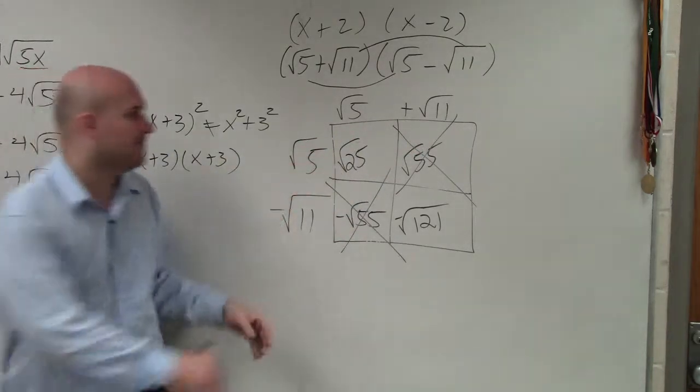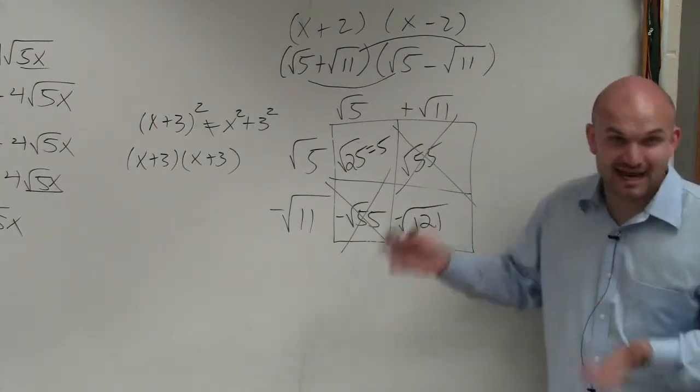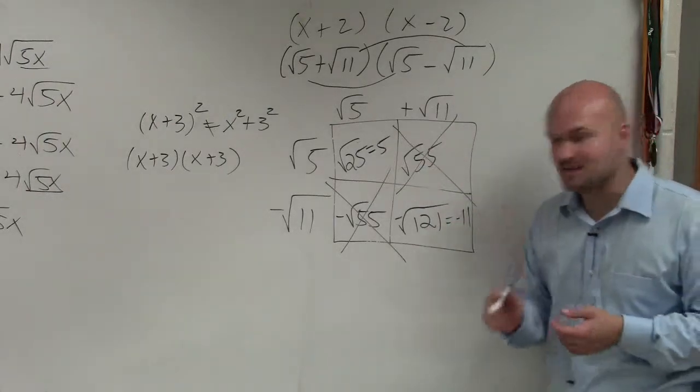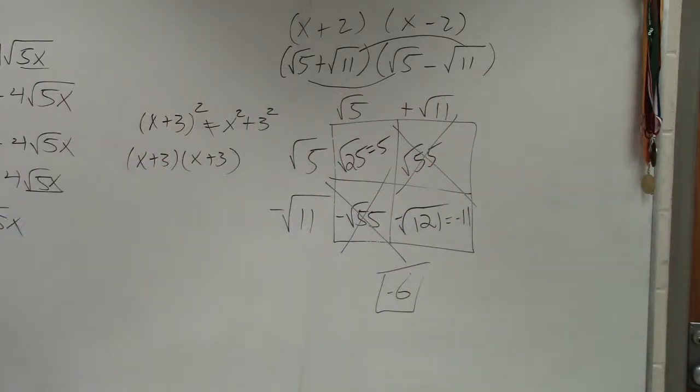So what's the square root of 25? Five. What is the square root of 121? 11. Times negative? Negative 11. What's 5 minus 11? Negative 6. That's your answer. Negative 6. Boom. Done.